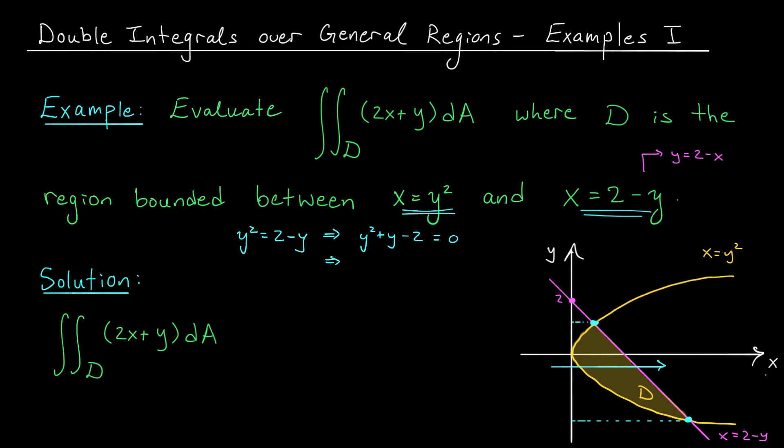We can factor this. We would get y plus 2, y minus 1 equals 0. And now you can see we have two solutions. Either y equals 1, that would correspond to this point up here, or y is minus 2, which would be this point down here.